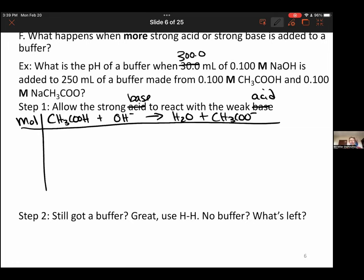This is a mole ICE table, so we're writing our units here to make sure we know it's not a molarity ICE table. Everything we do here will be in moles. From the last slide, we know we have 0.0250 moles of acetic acid. If we multiply 0.3 liters times 0.1, we get 0.0300 moles of hydroxide ion.